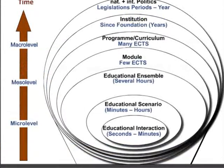Here you see some kind of inclusive hierarchical structure. I've not used a pyramid but circles inside circles, meaning that the micro-level educational interaction is included in a higher level — let's say in the program or curriculum. A program curriculum can't exist without educational interaction, educational scenarios, educational modules, etc. So you can see we are going from the very small — seconds to minutes — to the very big — national and international educational politics.